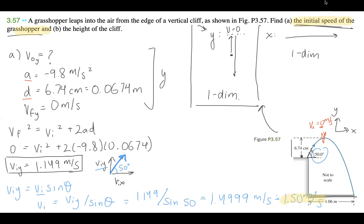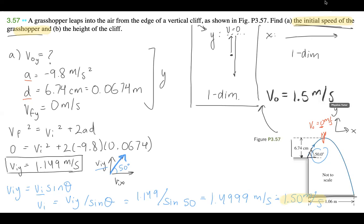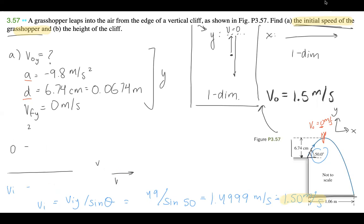I'll write that down: V-naught is equal to 1.5 meters per second. Now I'm going to erase Part A and we can solve for Part B.